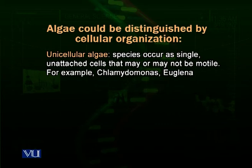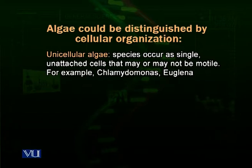Unicellular algae are those algal species which live as single organisms. For example, Euglena lives in pond water or lake water — each Euglena organism lives as a single, microscopic organism. Chlamydomonas is another example of unicellular algae.